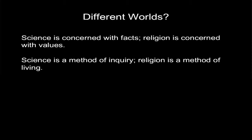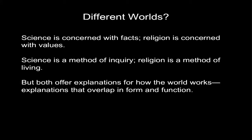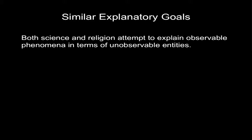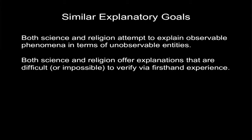But despite all those differences, there is one key fundamental overlap between science and religion, which is that both offer explanations for how the world works. Both are making empirical claims, and these explanations overlap in their form and their function. Both science and religion attempt to explain observable phenomena that affect our lives in terms of unobservable entities. And because those explanations evoke unobservable entities, they are oftentimes difficult to verify through first-hand experience, first-hand observation and experimentation — sometimes even impossible.